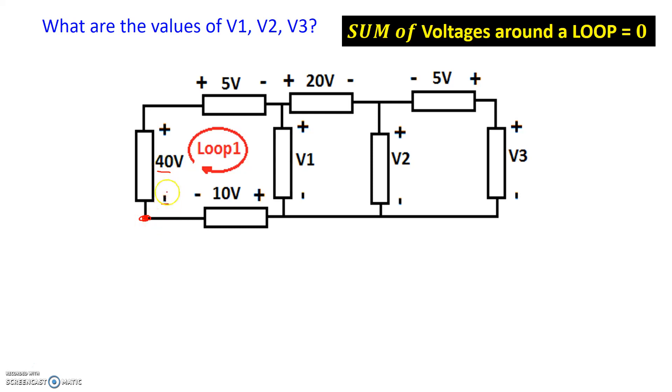So minus 40 because I encountered a negative sign first, so minus 40 plus 5 plus V1 plus 10 volts. And then I end up here, so that's equal to zero. So loop 1 minus 40 plus 5 plus V1 plus 10 should be equal to zero. And if I simplify this, I should get V1 is equal to 25 volts. So I have V1 equals 25 volts.